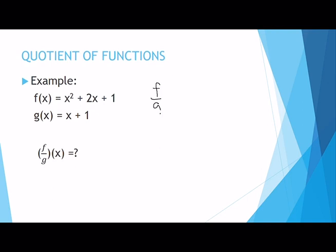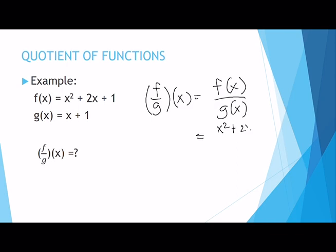We are computing (f/g)(x), which equals f(x) over g(x). We replace f(x) with x² + 2x + 1, and g(x) with x + 1. When doing division, if you cannot find anything to cancel to reduce the fraction, keep it as the final answer. But if there is something in common between numerator and denominator, go ahead and cancel it.